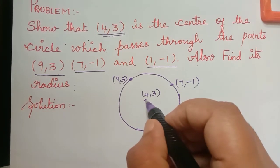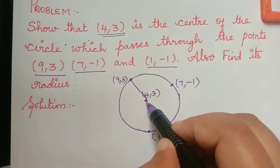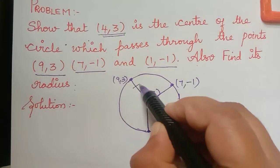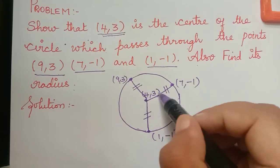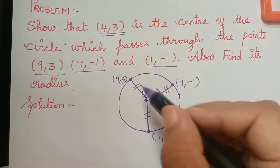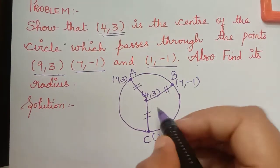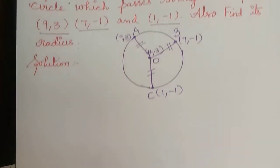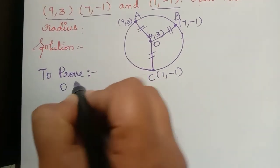To prove that this is the center, we have to prove that the distance between the center and the first point equals the distance between the center and the second point, and that distance also equals the distance between the center and the third point. If we prove that these three distances are equal, we would have proved that 4 comma 3 is the center, and hence we can also obtain the radius.